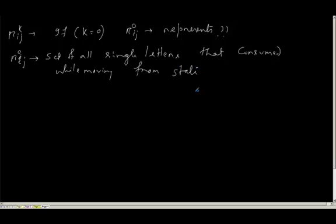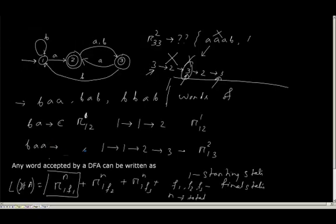Without, because 0 means what? From i to j there is no intermediate state. Means the way we are representing it, like 1,1,2,3.